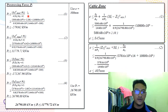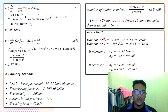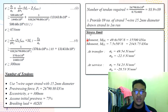We then calculate the pre-stress force based on the eccentricity obtained. The pre-stress force used is 26,790.8 kN/m. We then calculate the cable zone. Next, we calculate the number of tendons required. We assume 7-wire super-strand with a diameter of 15.2mm. The initial pre-stress force is 75%, giving 402 kN. The number of tendons required is 89, so we provide 89 strands of 7-wire at 15.2mm diameter.